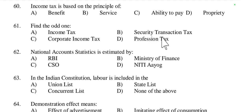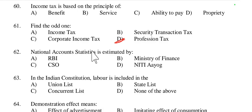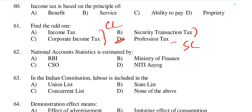Question 61: Find out the odd one — income tax, security transaction tax, corporate income tax, or profession tax. Profession tax is the odd one. While income tax, security transaction tax, and corporate income tax are all collected by the central government, profession tax is a state-level tax levied by state governments on professions, trades, and employment. So option D is the odd one.